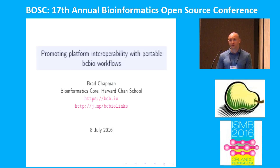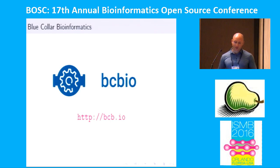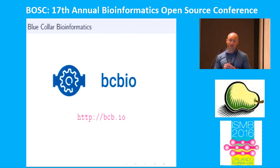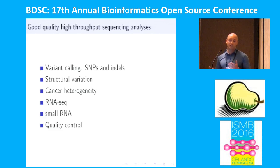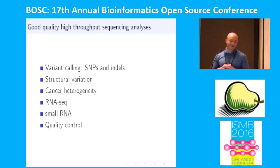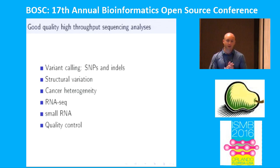I just want to talk quickly about work we've been doing in BCBio to try to make things work together better. You can check out this URL: bcb.io. We built a tool called BCBio, which stands for Blue Collar Bioinformatics — a set of good quality analyses for high-throughput sequencing data. So if you want to do variant calling, structural variations, cancer heterogeneity, RNA-seq, small RNA, or quality control, BCBio has community-built analysis tools to do that and do a really good job.